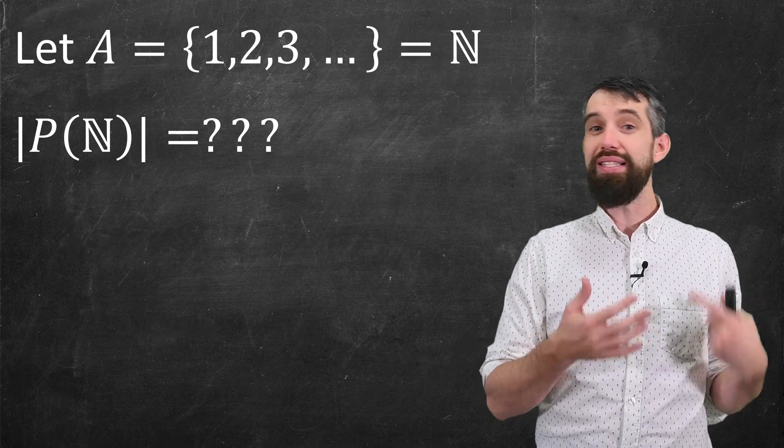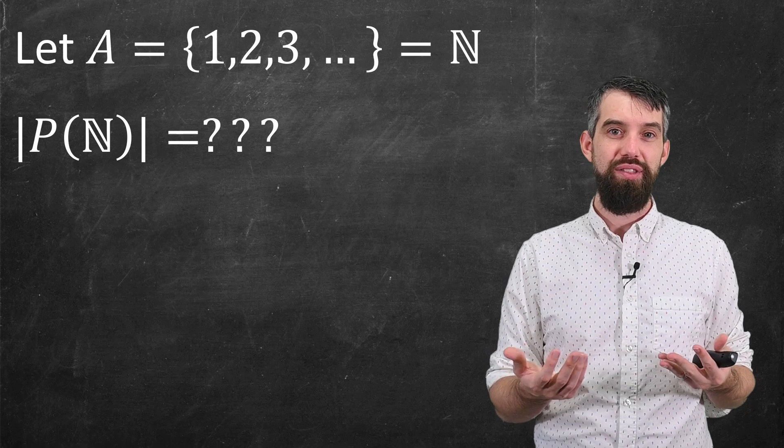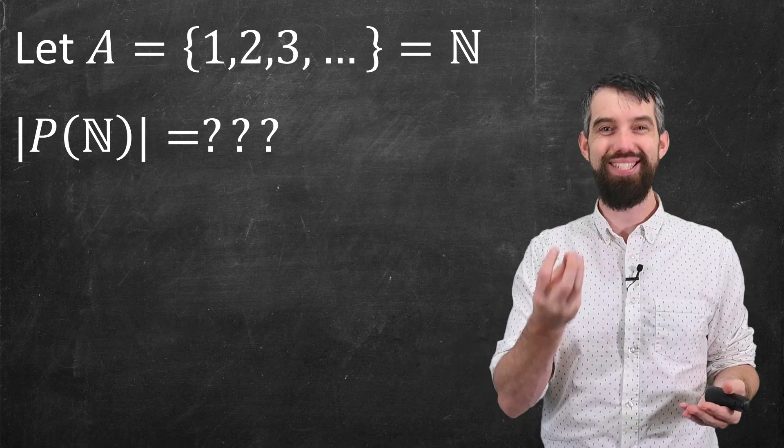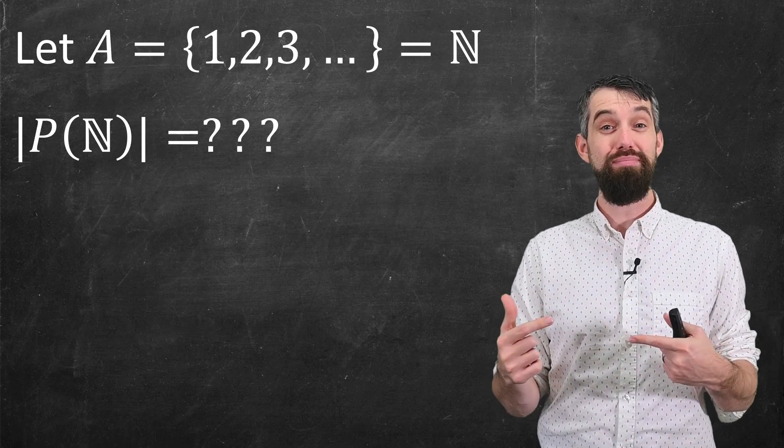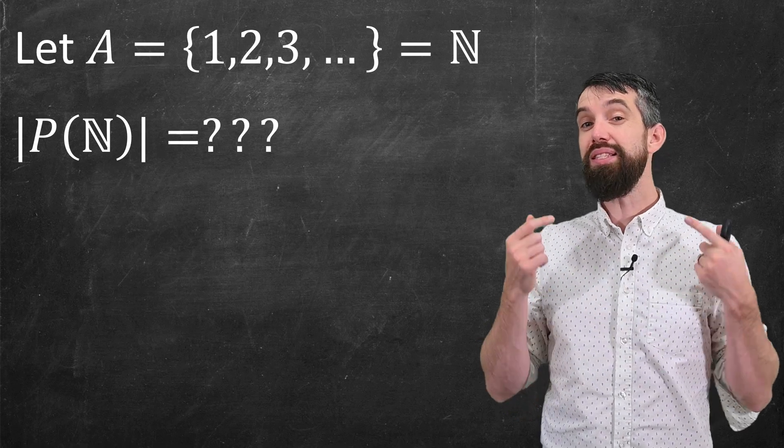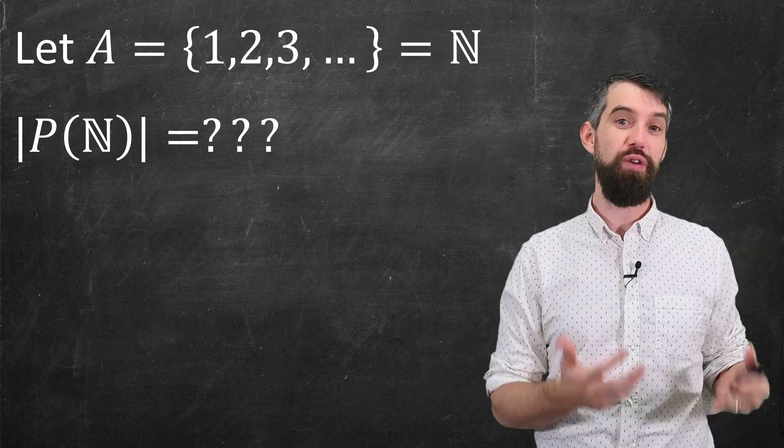I mean, surely its size is infinite. The original set is infinite, and even just taking the singleton subsets that have only one element in it, you quickly get there is infinitely many possible subsets.